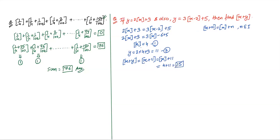Next: Solve 2·[x] = x + {x}. First, replace x with [x]+{x}: 2·[x] = [x]+{x}+{x} = [x]+2{x}. So [x] = 2{x}, meaning {x} = [x]/2. Since {x} ∈ [0,1), we get 0 ≤ [x]/2 < 1, so [x] ∈ {0,1}. If [x]=0: {x}=0, so x=0. If [x]=1: {x}=0.5, so x=1.5. Two solutions: x=0 or x=1.5.